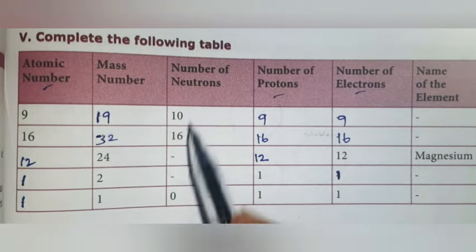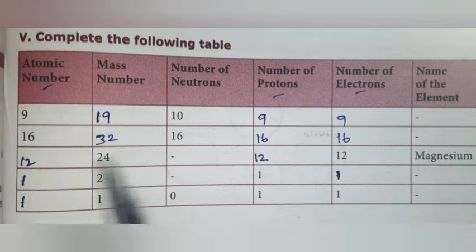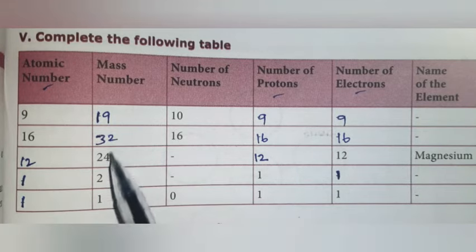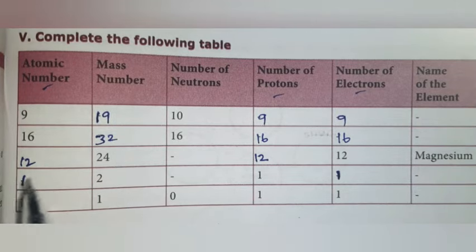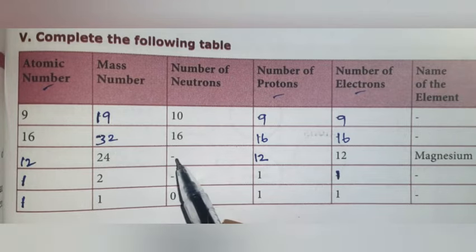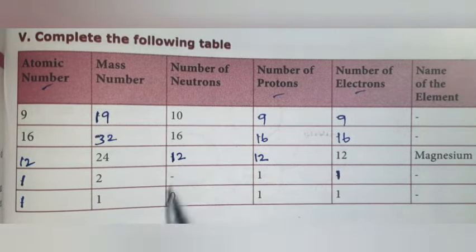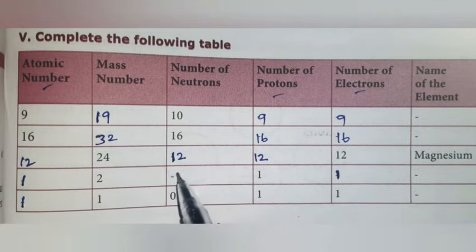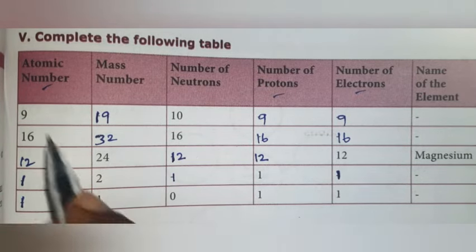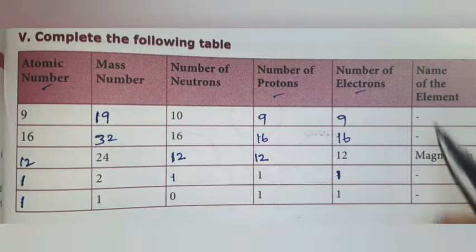Next we have to find the number of neutrons. Number of neutrons: we subtract the atomic number from the mass number. So 24 minus 12 equals 12 neutrons. Next, number of neutrons: 2 minus 1 equals 1.